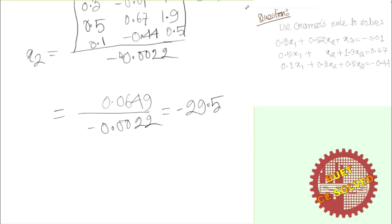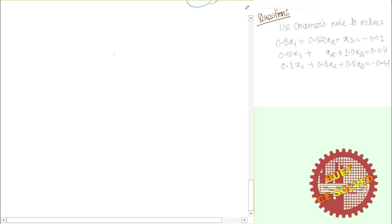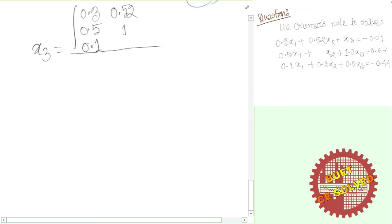The x squared value, minus 2 into 1.5. The v constant, x value, v rectangle on the right-hand side position. Values are: 0.3, 0.5, 0.1, 0.5, 2, then 1, 0.3 and then b1, b2, b3 — minus 0.01, 0.67, minus 0.44 — which gives determinant value minus 0.0022.